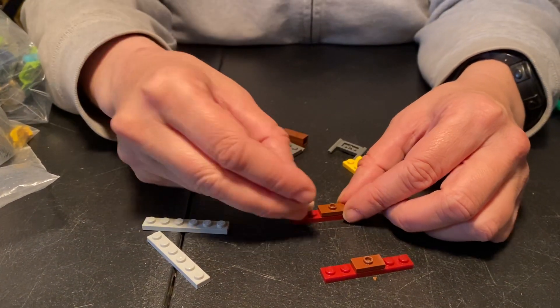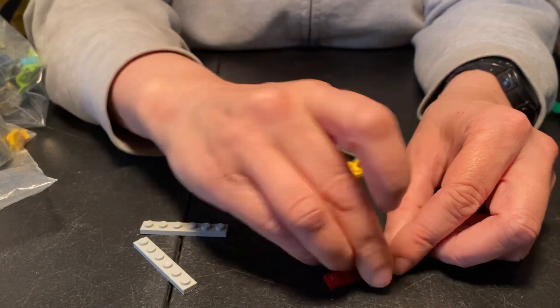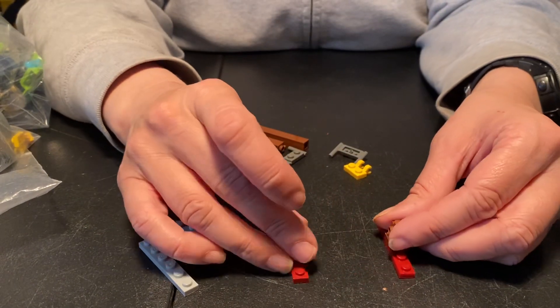Then on each jumper, you're going to stick one of these headlight bricks and face the two headlight bricks toward each other.